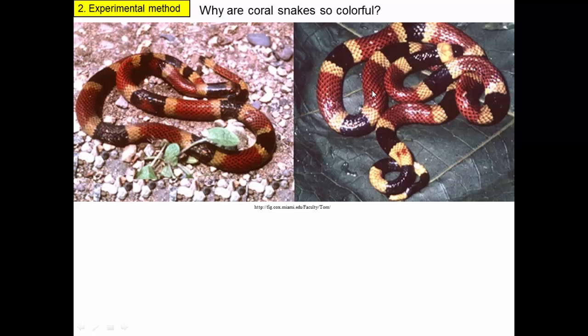Coral snakes are colorful — they have red and yellow and black bands. Why are these snakes so colorful? It's a kind of unusual trait. They look almost like a flag. A lot of snakes are just brown or green, so clearly something's going on. We want to come up with some hypotheses that would explain this color pattern — going out in nature, looking at these snakes, thinking about everything we know, and trying to come up with at least one hypothesis, but ideally several hypotheses in order to test them. We want to do strong inference.